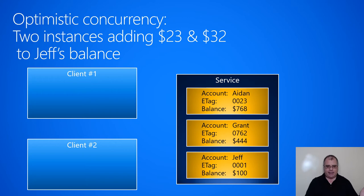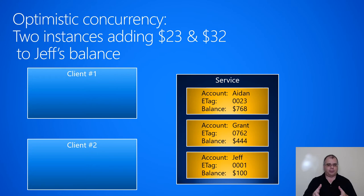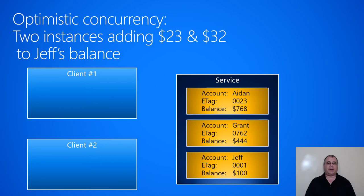Let's demonstrate with a bank account example. On the service there are bank accounts for Aiden, Grant, and Jeff. Each has an eTag indicating how many versions or changes have been made. The Aiden account uses sequential numbering and its eTag is 23, meaning we're on the 23rd version. Focusing on the Jeff account: it's at version one and currently has a balance of $100. Two clients both want to deposit money into Jeff's account — one will deposit $23 and the other $32. Altogether, $55 should be added to $100, so the final result should be $155.